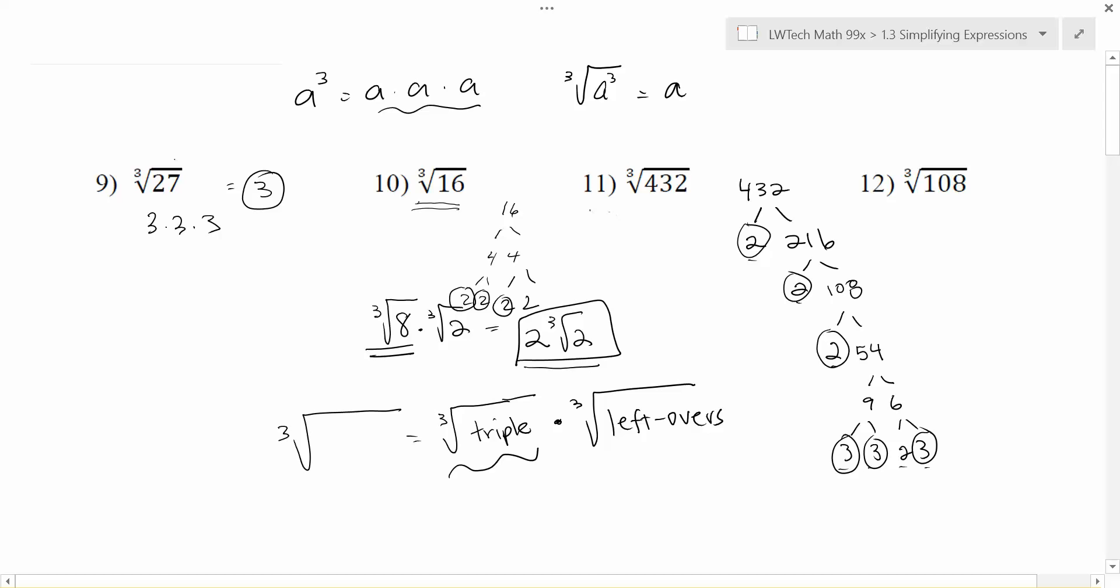So when I come up here to the cube root of 432, I'm going to put all my triples in one. So 2 times 2 times 2 times 3 times 3 times 3. And if I multiply all that together, I get 216. And then I had 1 leftover 2 that wasn't a perfect triple.